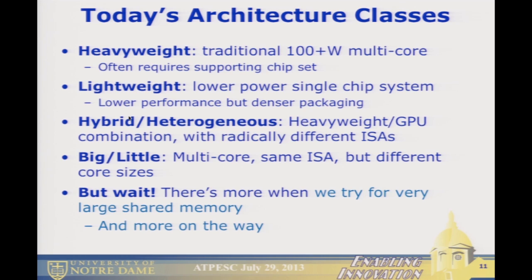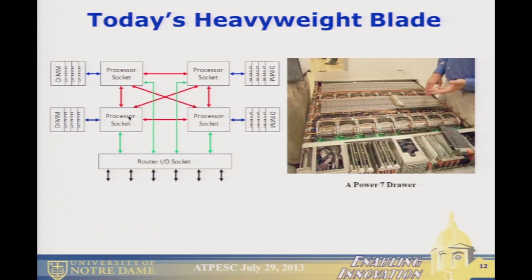There are also several other categories of architectures with one-off kinds of things. Those show up when you try to build systems with a very large amount of memory, particularly if you want it to be cache coherent. In terms of pictures, this is a heavyweight blade — a Power 7 — and you can see the big heat sinks. We like the name heavyweight because you literally can't lift those things; they're all copper.